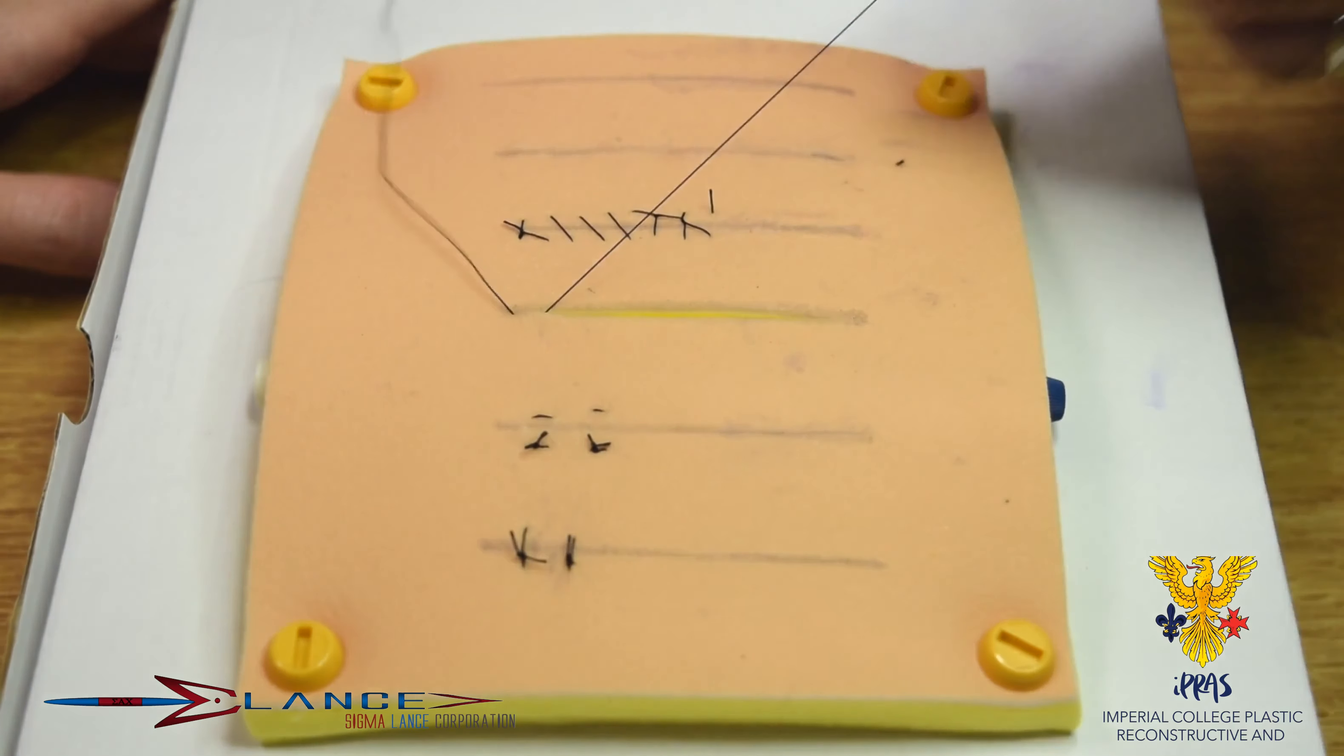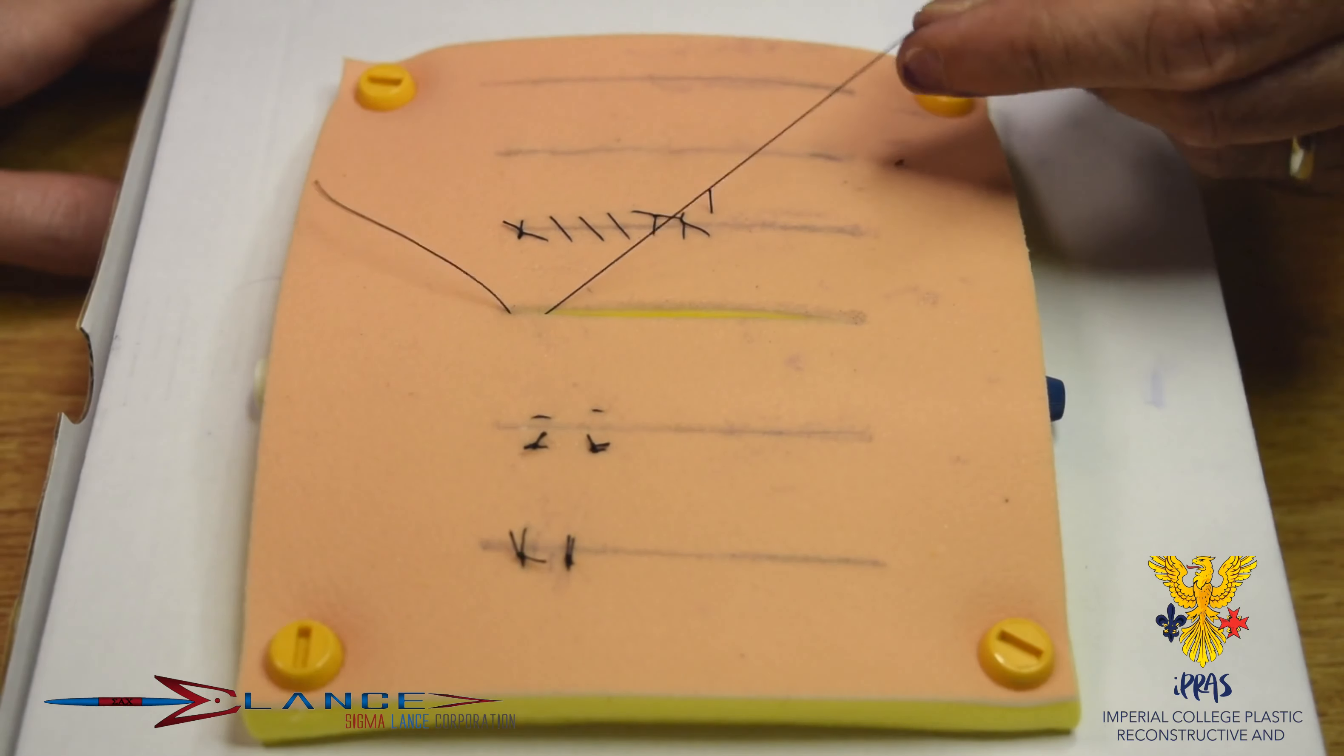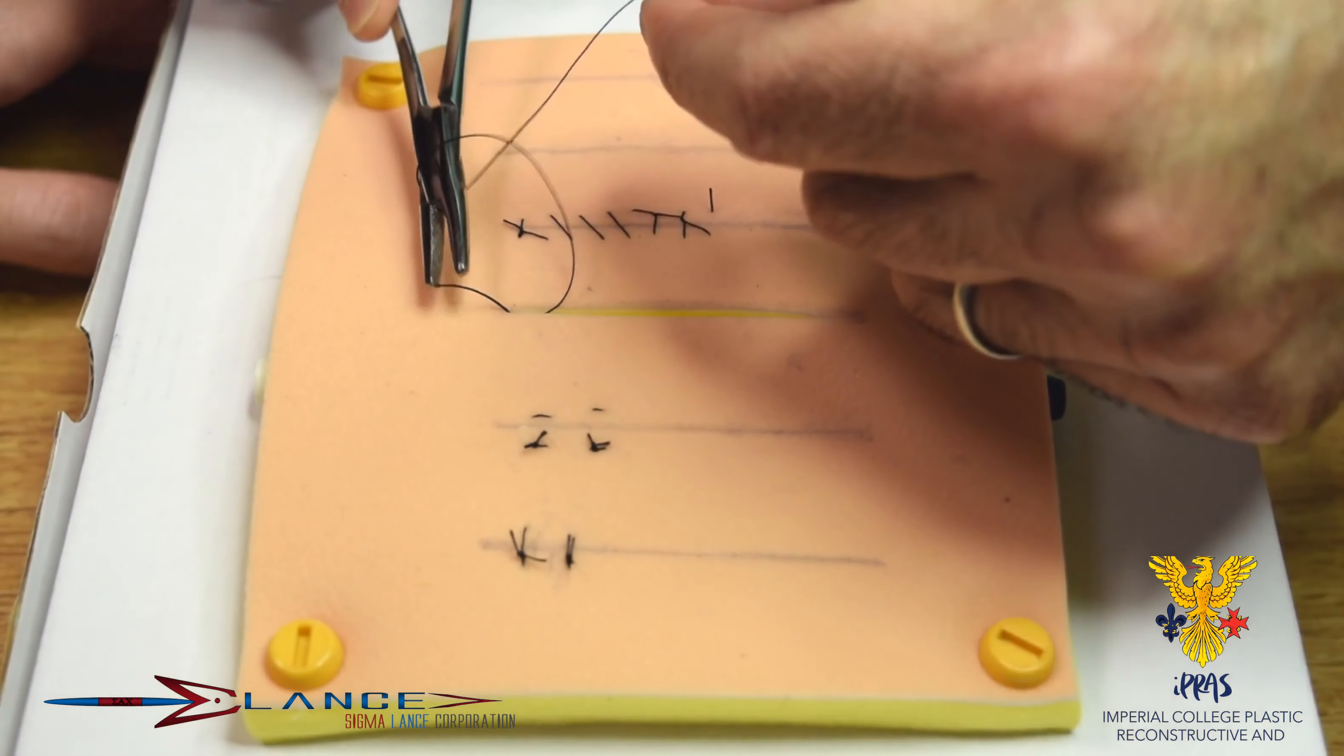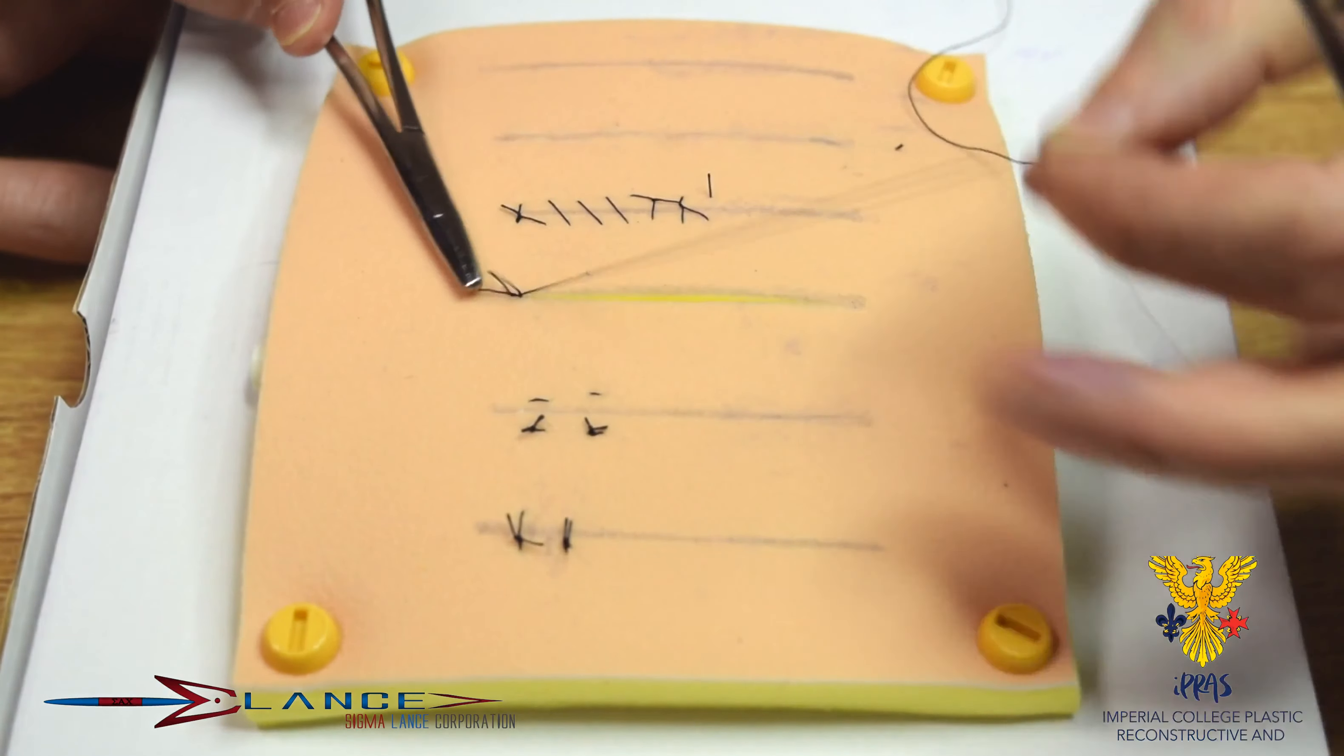And again, don't worry, this is slightly more difficult than real life because the dermis would ordinarily be much thicker than that. So it's much easier to grab that white dermis, but you should try and get in that plane. We just put a single knot in there so there's not too much knot material at the end.